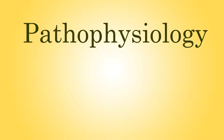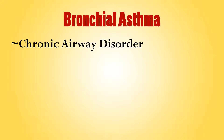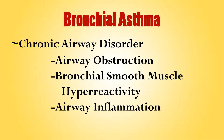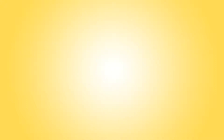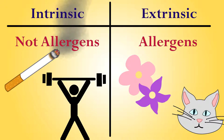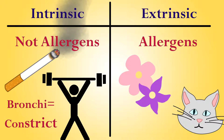So now we can talk about the pathophysiology of asthma. Bronchial asthma is a chronic disorder of the airways that causes episodes of airway obstruction due to bronchial smooth muscle hyper-reactivity and airway inflammation and obstruction. There are two types of asthma: intrinsic and extrinsic. Extrinsic asthma is caused by exposure to allergens, and intrinsic asthma is not associated with allergens — it's caused by other triggers such as cold air, smoke, or exercise. Most people have a combination of the two.